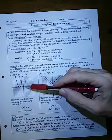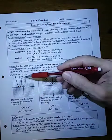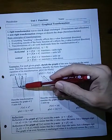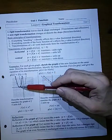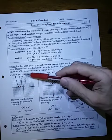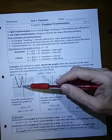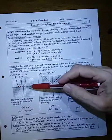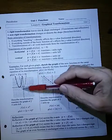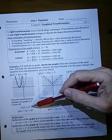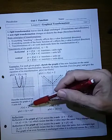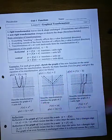This is our original function. If we take f of x plus 4, that's going to move it 4 to the left. We recognize this is the quadratic or squaring function, f of x equals x squared, so the new function must be x plus 4, squared.